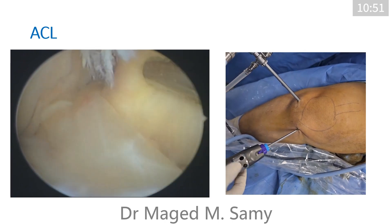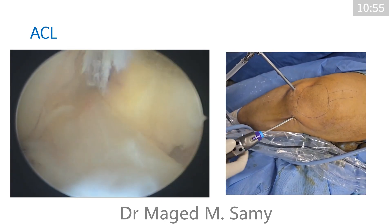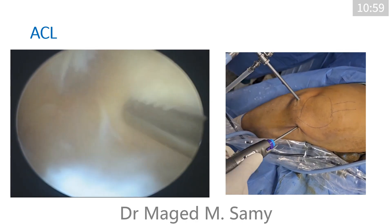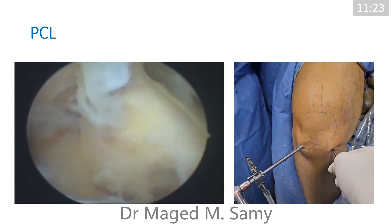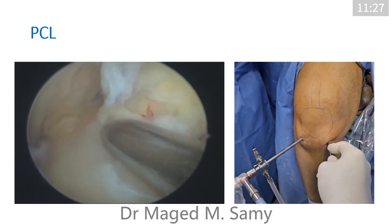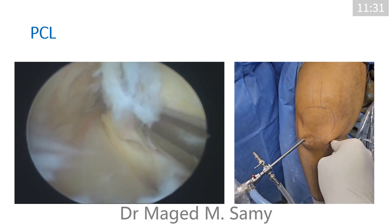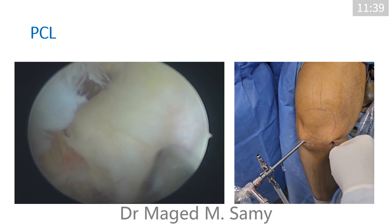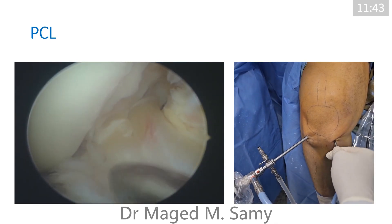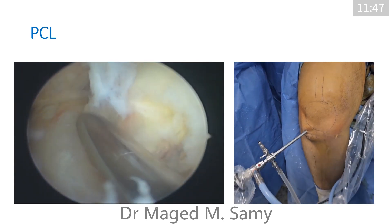Where we are now shaving is the synovium covering the PCL. Usually you have to remove a little bit of it to see the posterior cruciate ligament. This is the PCL. The ACL and PCL make approximately 90 degrees with each other. The PCL runs from the posterior tibia all the way to the anterior aspect of the medial femoral condyle just behind the cartilage. We have an ACL tear because the ACL fibers are inferior to their normal position.